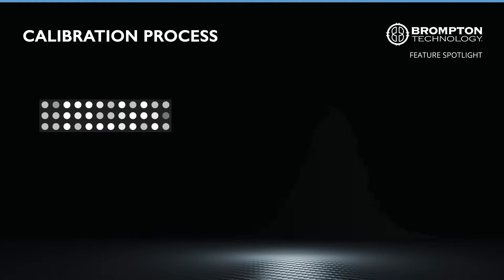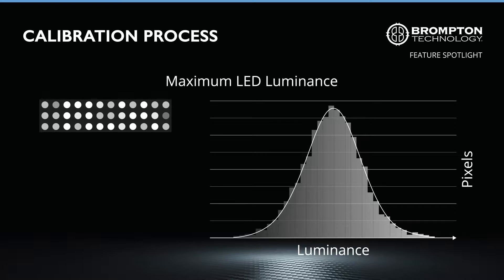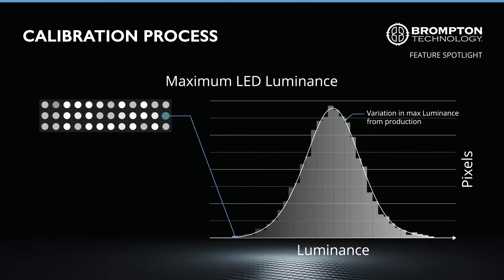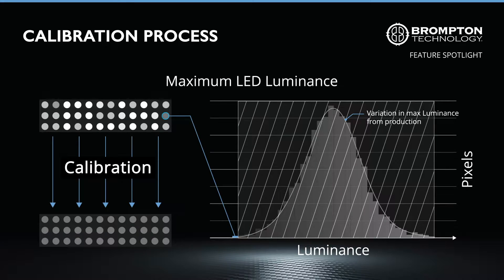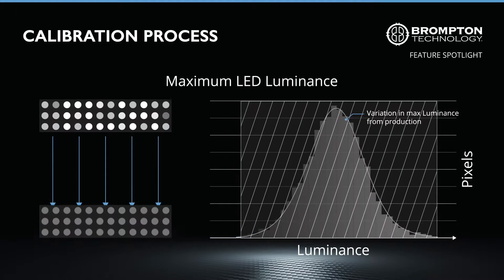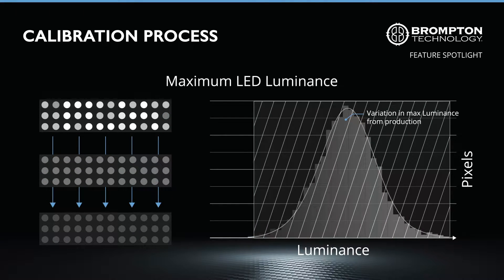The manufacturing process creates LEDs with some level of variation to their maximum achievable brightness. Calibration aims to mitigate this variability in brightness. To do this, it looks at a batch of LEDs, finds the least bright one, and caps all other LEDs to that brightness, even those that are potentially much brighter.